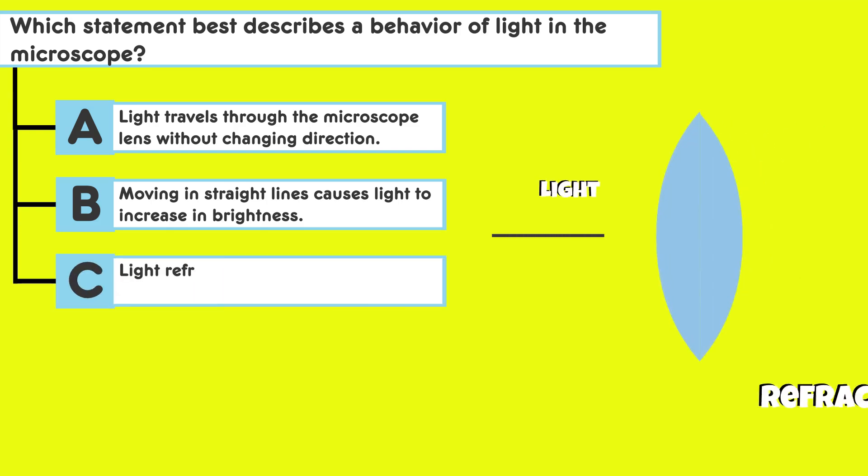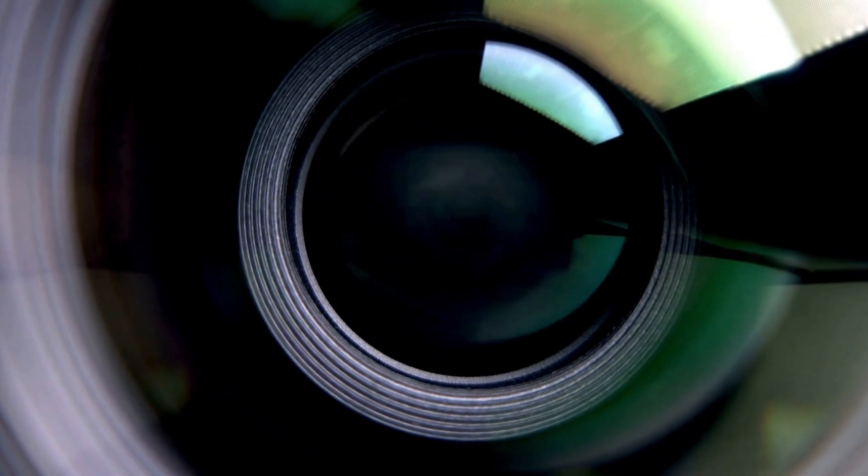Answer choice C: Light refracts through the lens of the microscope. So let's think about this. Reflect on how lenses work. Does the light bend as it passes through the lens?